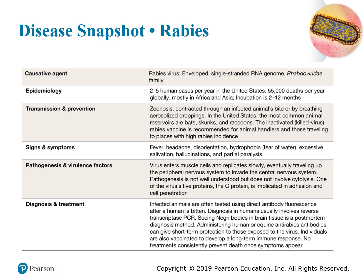Rabies symptoms also include fear of water, excessive salivation, hallucinations, and partial paralysis. The virus enters muscle cells, replicates slowly, and then travels to the peripheral nervous system before invading the central nervous system. The virus has various proteins including the G protein, which helps with adhesion to the cell and penetration. Detection usually occurs after a patient is suspected of being bitten by an infected animal, typically through PCR testing. If the patient does not survive, brain tissue is examined at autopsy to confirm the cause of death.